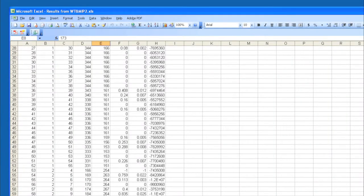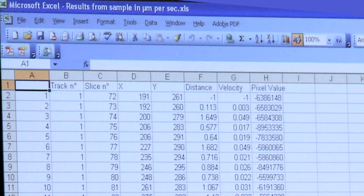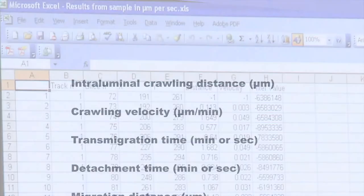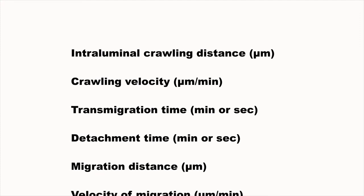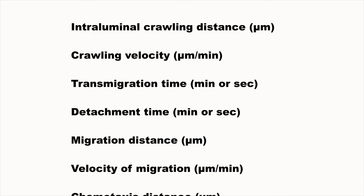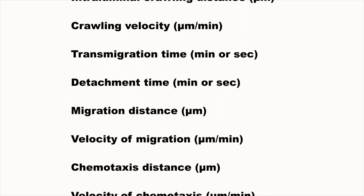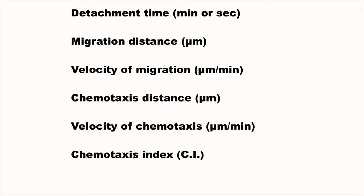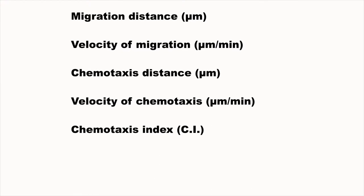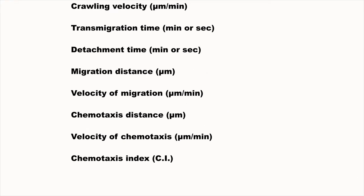Open the results file in Microsoft Excel. Start analyzing the data. It is important to take the movements of the reference point into the analysis. When tracking neutrophil intraluminal crawling, we determine the neutrophil intraluminal crawling distance and crawling velocity. When analyzing neutrophil transendothelial migration, we measure neutrophil transmigration time and the detachment time. When determining neutrophil chemotaxis in cremaster muscle tissue, we measure the distance and velocity of neutrophil migration and chemotaxis in the muscle, and we also determine the chemotaxis index during neutrophil chemotaxis in muscle tissue. The definitions of these parameters, shown on the screen, are given in detail in our written protocol.